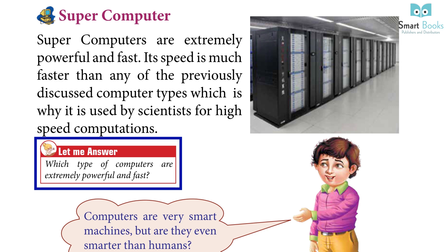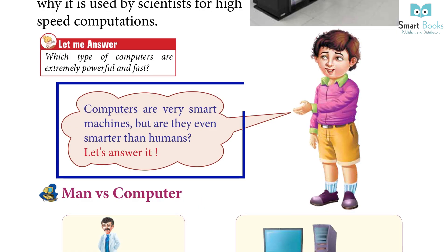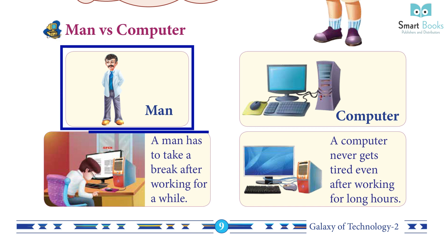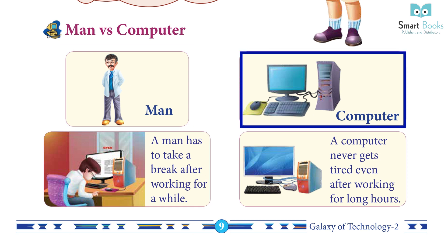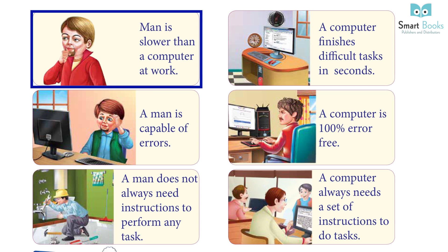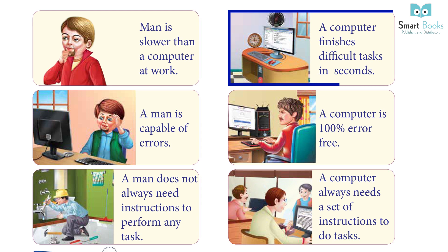Computers are very smart machines, but are they even smarter than humans? Let's answer it — man versus computer. A man has to take a break after working for a while, but a computer never gets tired even after working for long hours. Man is slower than a computer at work; a computer finishes difficult tasks in seconds.